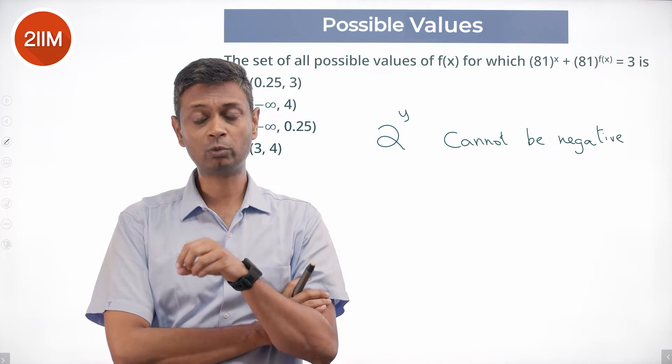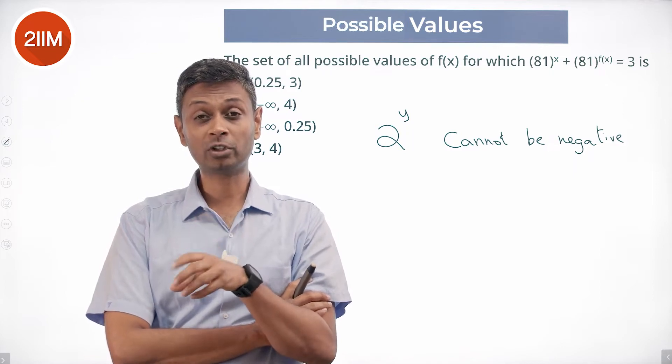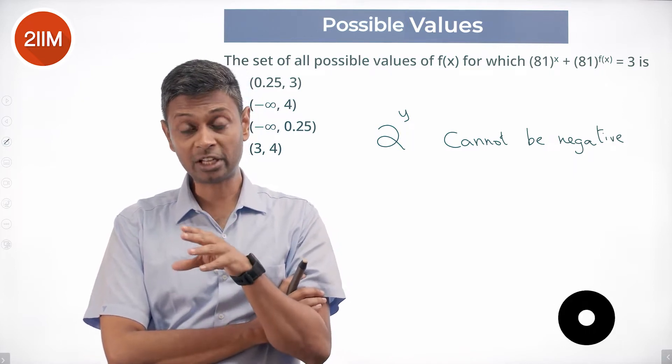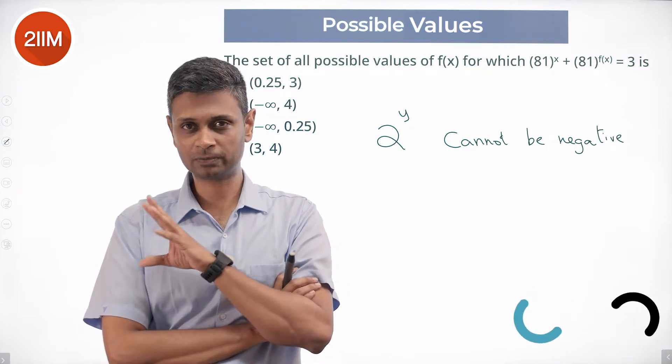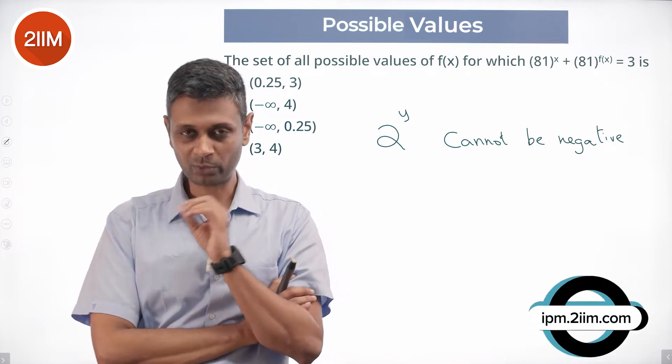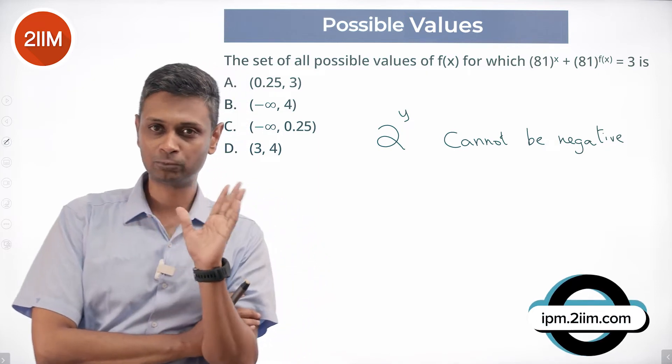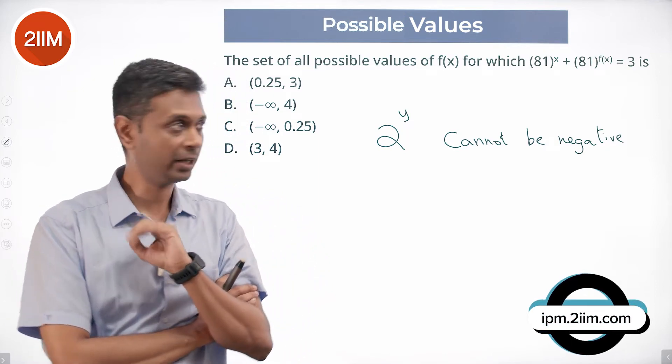2 power 3 is positive, 2 power 1/3 is positive, 2 power minus 3 is positive, 2 power minus 1/3 is positive. 2 power y cannot be negative — super important idea.